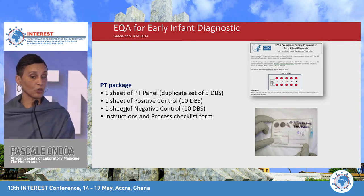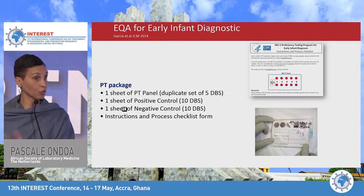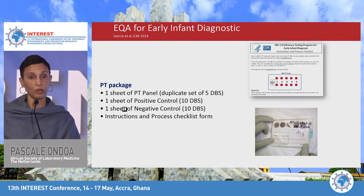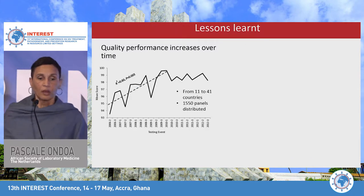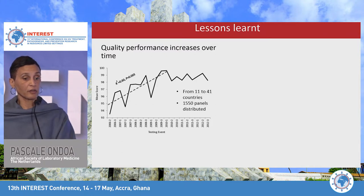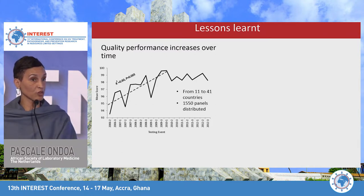For early infant diagnostics, this is how a PT panel looks — you have dried blood spots for the PT panel itself and also for positive and negative controls, along with instructions explaining what the laboratory has to do. Over seven years, the quality performance increased over time, which is good news: the more you participate in EQA, the better quality you achieve.